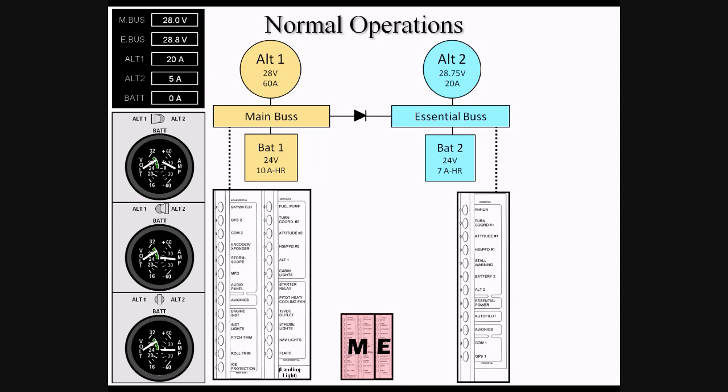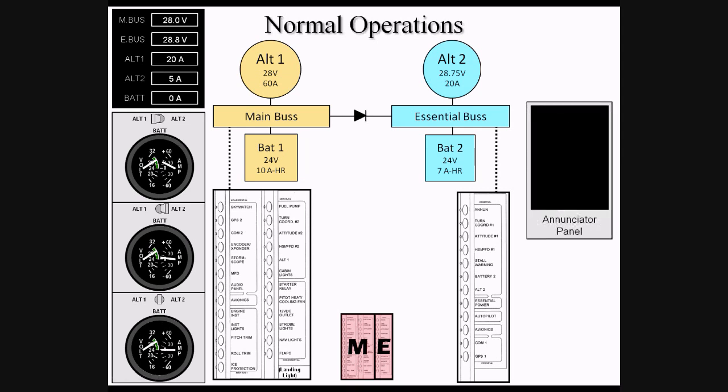So indication during normal operations would be main bus and essential bus voltage, the same as the voltage of their corresponding alternator. Alt-1 producing anywhere from 10 to 25 amps, depending on electrical load, while Alt-2 has a much smaller load as there are fewer items being powered by it. As all systems are operating normally, the enunciator panel will be dark.